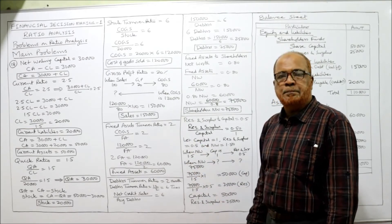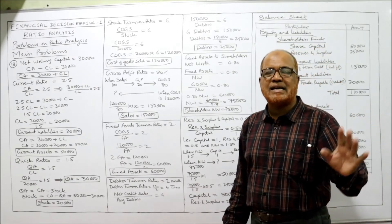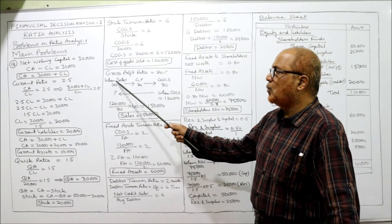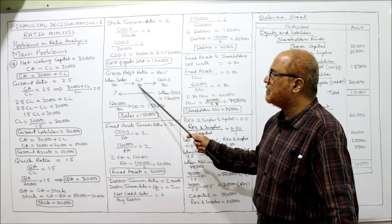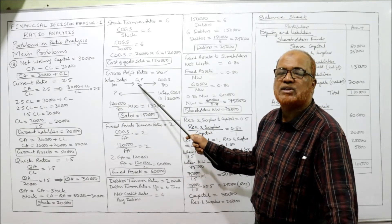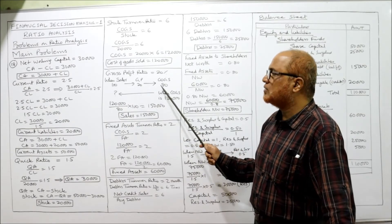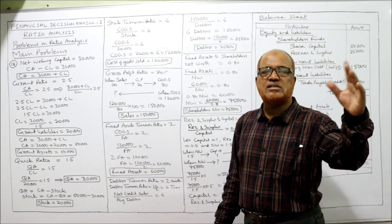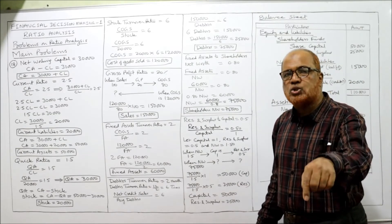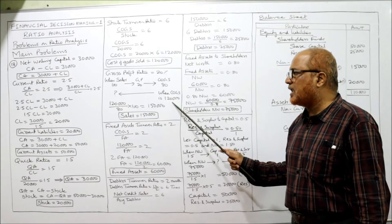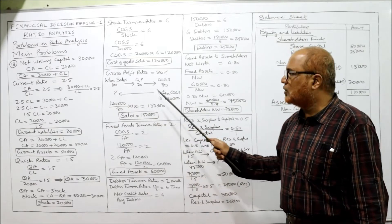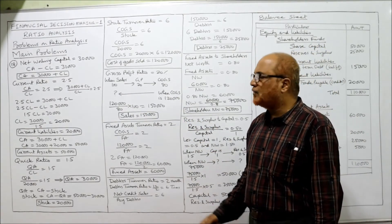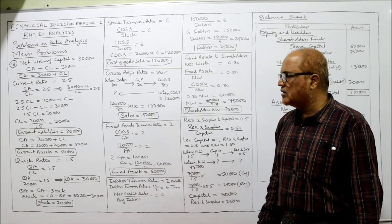Gross profit ratio is 20%. If sales = 100, GP = 20 and COGS = 80. Our actual COGS is ₹1,20,000, so sales = (1,20,000/80) × 100 = ₹1,50,000.